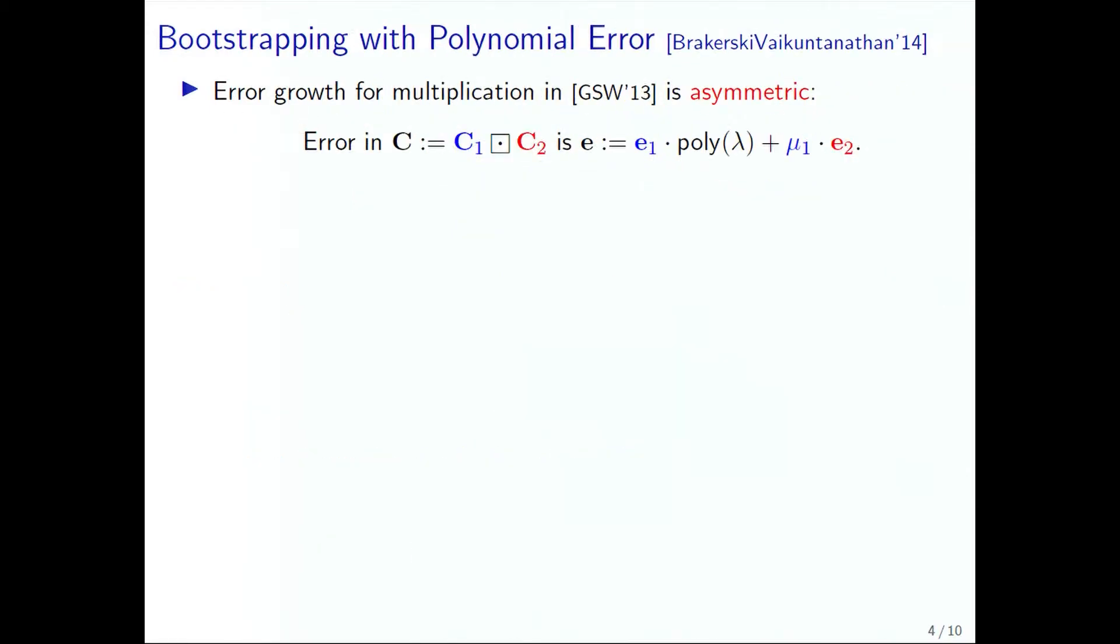Brakerski and Vaikuntanathan actually showed you can do better. They noticed that multiplication in the GSW scheme is asymmetric. The error on the left ciphertext grows by a factor polynomial in the security parameter, but the error from the right ciphertext only grows by a factor corresponding to the message. As a result, if the messages are all binary, you can multiply a whole chain of ciphertexts in a right associative manner, and the error will only grow by a polynomial level, essentially quasi-additive.